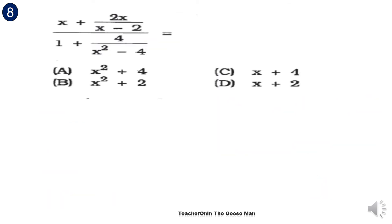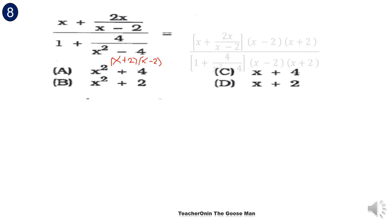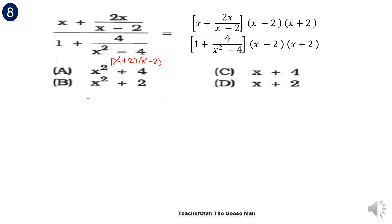Let's take these complex fractions. The denominator is x minus 2, and the denominator of the denominator is x squared minus 4. This can be factored as (x plus 2)(x minus 2), which is a difference of two squares. So our LCD is (x plus 2)(x minus 2). We multiply both the numerator and denominator by (x minus 2)(x plus 2).